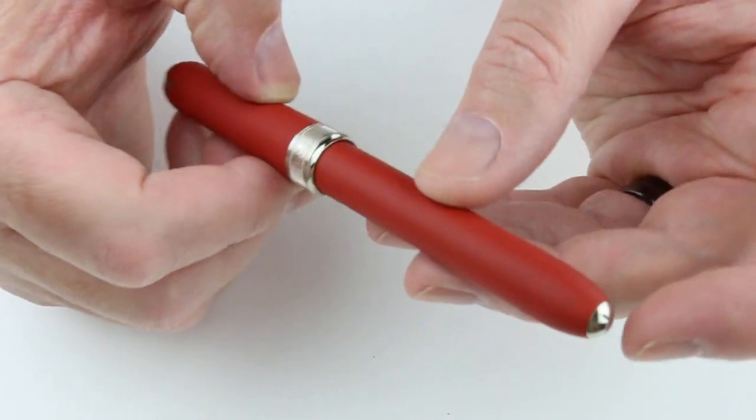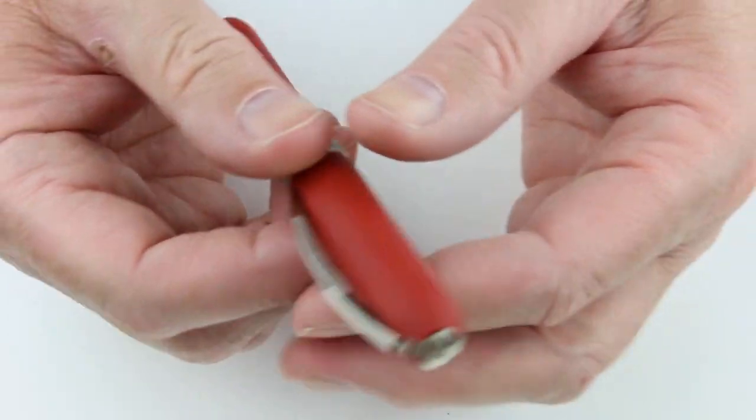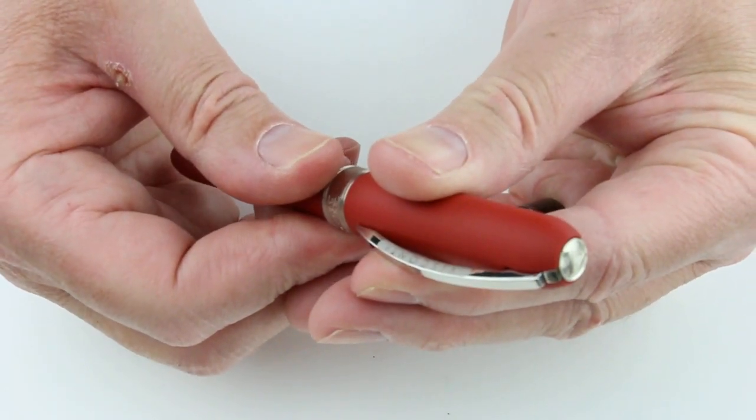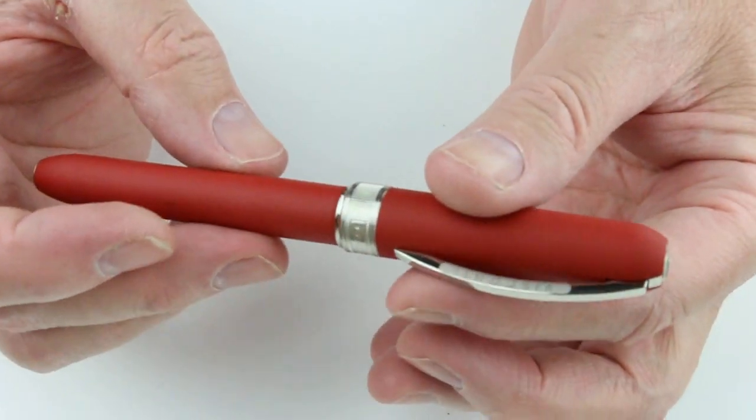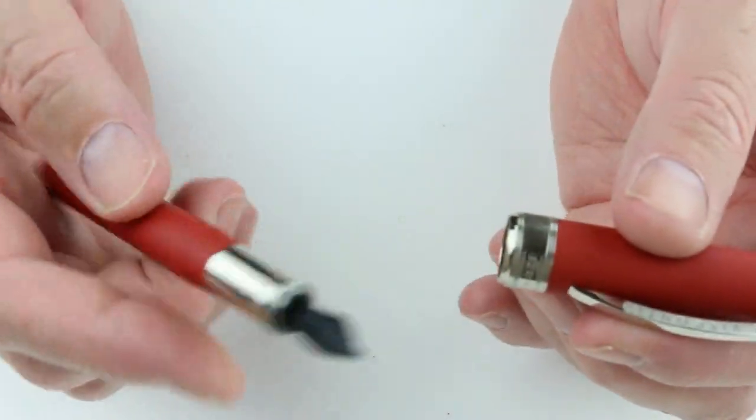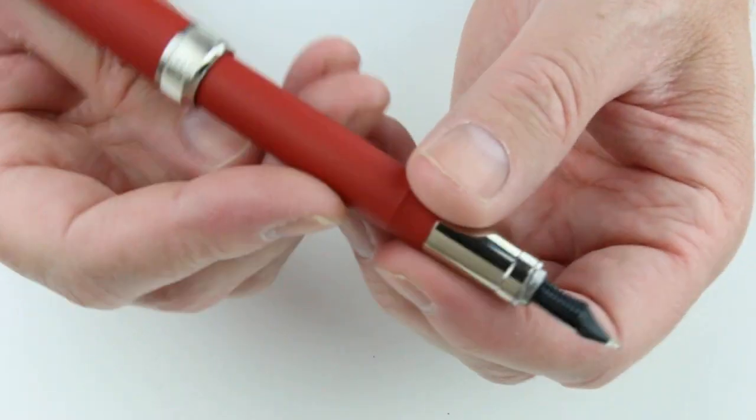On the end of the pen is just a small silver metal knob. The cap is a magnetic cap that will post as well on the end of the barrel of the pen.